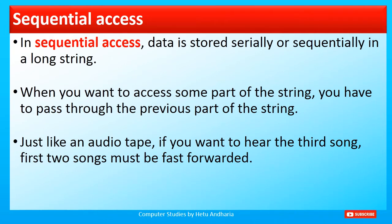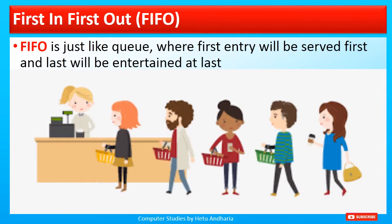In sequential access, data is stored serially or sequentially in a long string. When you want to access some part of the string, you have to pass through the previous part, just like an audio tape — if you want to hear the third song, the first two songs must be fast forwarded. The next method is first in, first out, in short FIFO. FIFO is just like a queue where the first entry will be served first and the last entry will be entertained at last. Who is standing first will get the first chance at the counter — this storage method is known as FIFO.